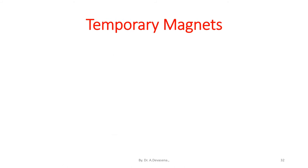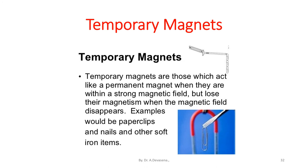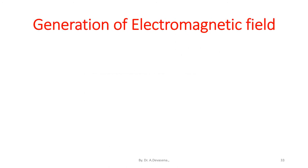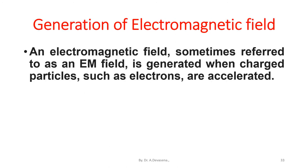Temporary magnets are those which act like a permanent magnet when they are within a strong magnetic field, but lose their magnetism when the magnetic field disappears. Examples would be paper clips, nails, and other soft iron items. Here is a representation of a temporary magnet.